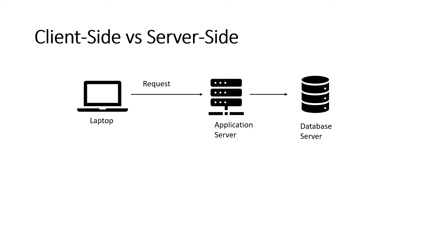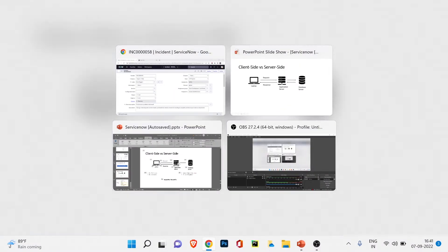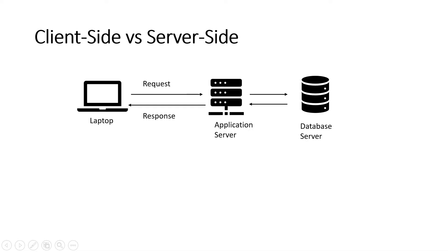The database server is located in the ServiceNow data center, as we discussed in the introduction video. When the application server requests the incident details, the record is fetched from the database server and returned to the application server. The application server then sends the response back to your laptop screen — the incident page. This is how a request travels from your laptop to the application server, then to the database server, and the response comes back.